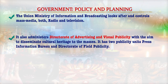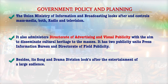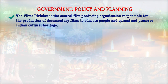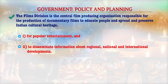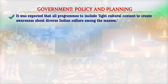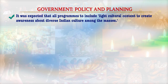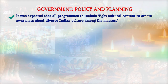The Ministry has two publicity units: the Press Information Bureau and the Directorate of Field Publicity. Its Song and Drama Division looks after the entertainment of large audiences. The Film Division is a central film-producing organization responsible for production of documentary films to educate people and preserve Indian cultural heritage. The mass media organizations were set up for popular entertainment and to disseminate information about regional, national and international developments. All programs were expected to include light cultural content to create awareness about diverse Indian culture among the masses.